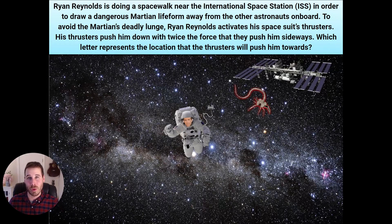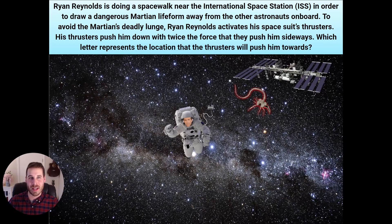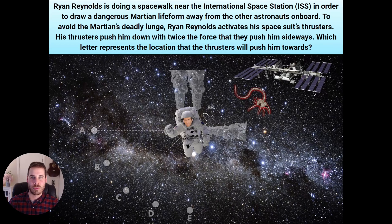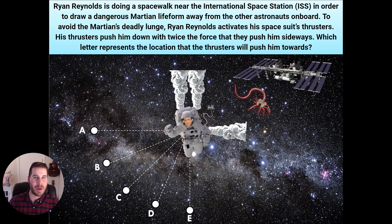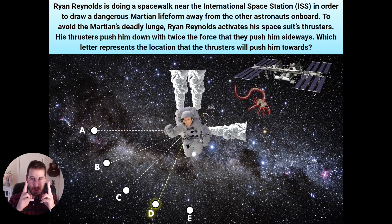Ryan Reynolds is doing a spacewalk near the International Space Station, or ISS, in order to draw a dangerous Martian life form away from the other astronauts on board. Thank you, Ryan. To avoid the Martian's deadly lunge, Ryan Reynolds activates his spacesuit's thrusters. His thrusters push him down with twice the amount of force that they push him sideways. Which letter represents the location that the thrusters will push him towards? Is it location A directly to his left? Is it location E straight down? Is it C, which is at a 45 degree angle? Or is it B or D, which are kind of in between those options? The correct answer is option D. The double jets that he's got pushing in the upward direction are going to actually push him in the opposite direction, downward. So those two on top would push him towards location E. But then there's also that jet to the right, which is going to end up pushing him to the left. That's Isaac Newton's third law of motion, which you will discuss in a future video that says every action has an equal and opposite reaction.